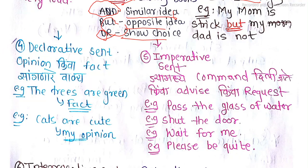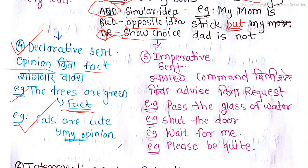Next is the declarative sentence. A declarative sentence is used to share a fact or opinion. For example: 'The trees are green' — that is a fact. 'Cats are cute' — that is my opinion. Both are declarative sentences because we are conveying information or opinions.